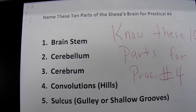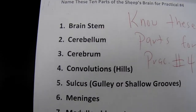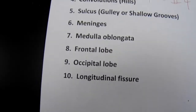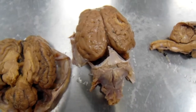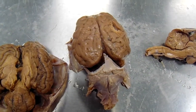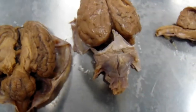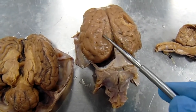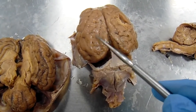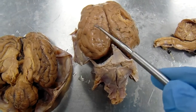Know these ten parts of the sheep brain. The sheep brain has three major regions. When you hear regions — here is the cerebrum. The big one is the cerebrum.